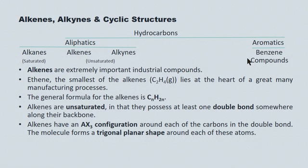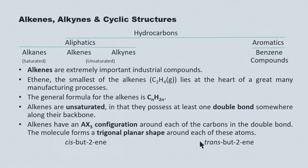Referring back to stereochemistry from grade 11, alkenes have an AX3 configuration around each of the carbons in the double bond. The molecule therefore forms a trigonal planar shape around each of these two atoms. We're going to look at cis-butene on the left and trans-butene on the right. This cis and trans is another form of isomerism that you're responsible for — it arises with double bonding.